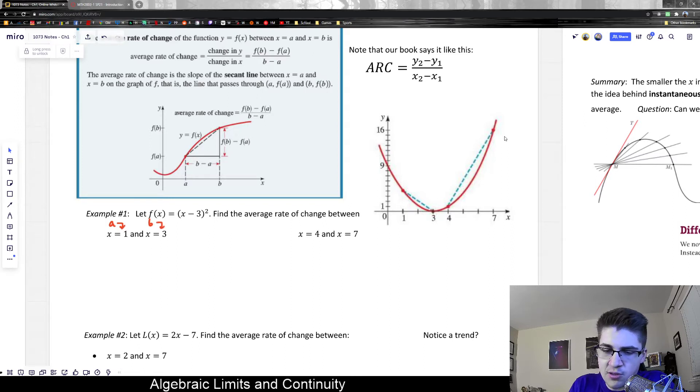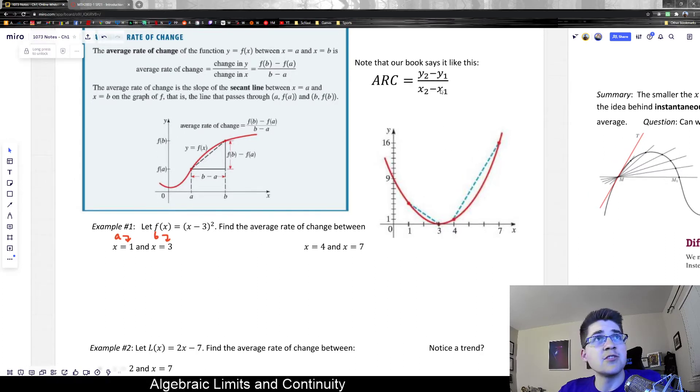And then just use the average rate of change formula from above. But you could also use the y2 minus y1, x2 minus x1. You could use that formula as well because ultimately we're just trying to figure out the slope of this.